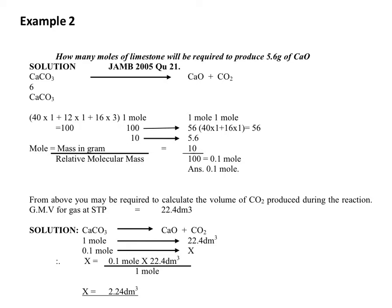In this question, we are concerned with limestone CaCO3 and calcium oxide CaO. We want to know how many moles of limestone would be required to produce 5.6g of calcium oxide. From the equation of reaction, one mole of CaCO3 gives one mole of CaO. We will now find the relative molecular mass of these two compounds.